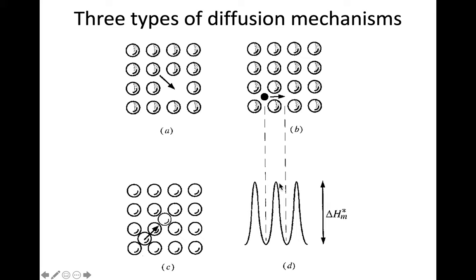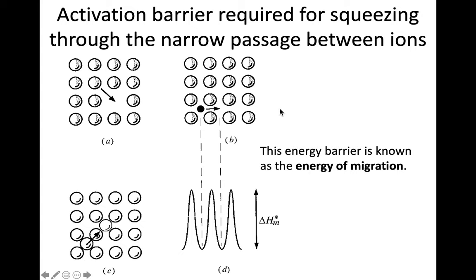It's the energy barrier to this process. This is what we have to supply through thermal energy or otherwise to have this interstitial go from this site to this site. That's known as the energy barrier or the energy of migration, which is why it's given an enthalpy, and then the M is for migration.